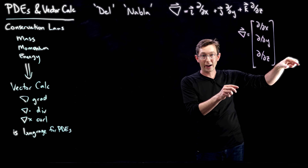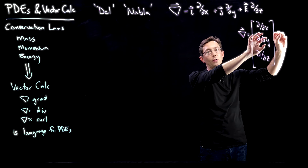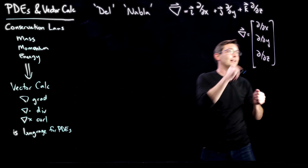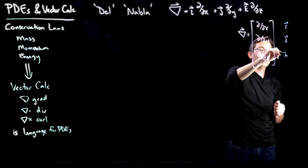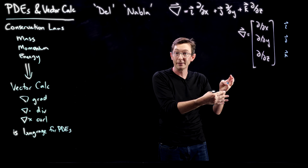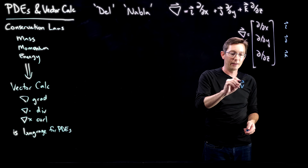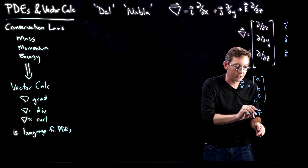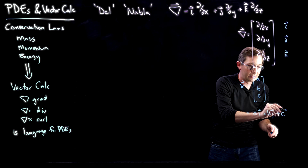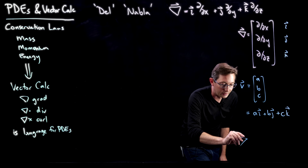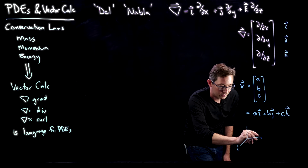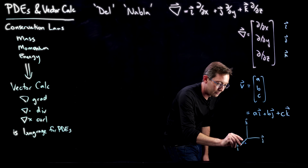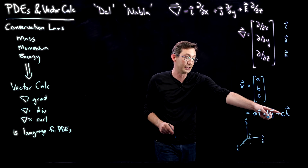If I took this and dotted it with another vector, it would take ∂/∂x of that first component plus ∂/∂y of that second component plus ∂/∂z of that third component. This can be treated like a vector. The i-hat, j-hat, and k-hat just refer to the first, second, and third components of my vector — just like if I had a vector v called (a, b, c), that would be a in the i direction, b in the j direction, and c in the k direction. I could draw this in i-j-k coordinates: take a steps in i, b steps in j, and c steps in k.